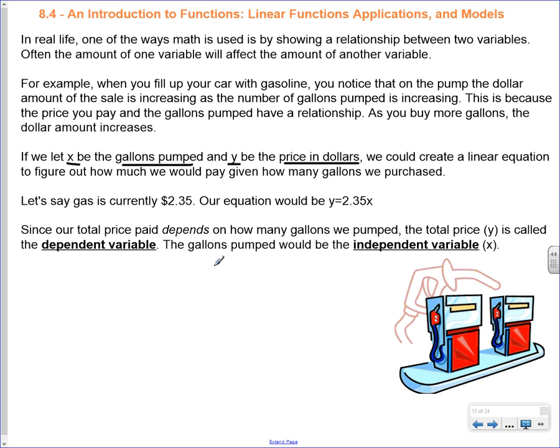We could create a linear equation to figure out how much we would pay given how many gallons we purchased. Let's say gas is about $2.35. Our equation would be y equals 2.35 times x. Since our total price depends on how many gallons we pumped, the total price, which we called y, is called the dependent variable, because it depends on the x variable. The x variable, which was our gallons pumped, would be the independent variable. You can choose how many gallons you're going to pump, and then the price depends on that number of gallons that you chose.